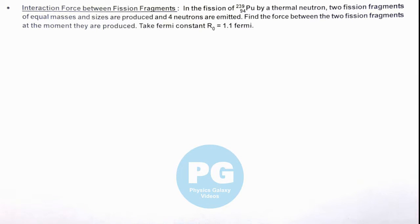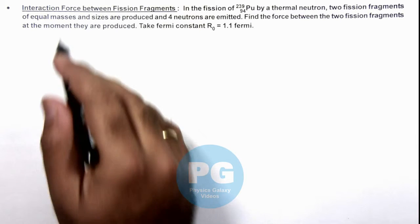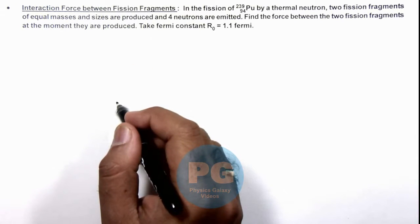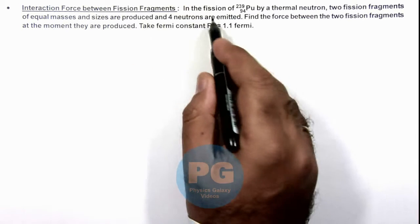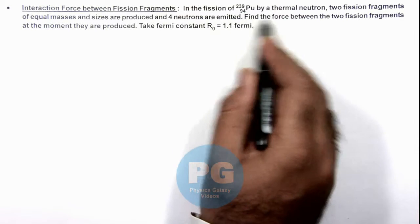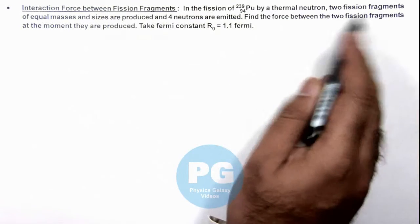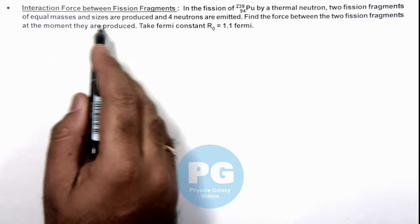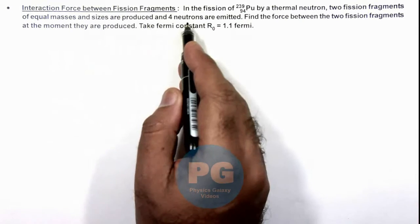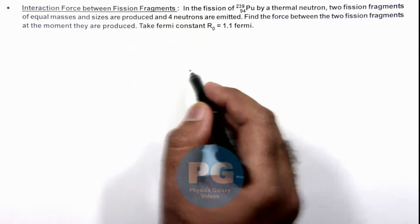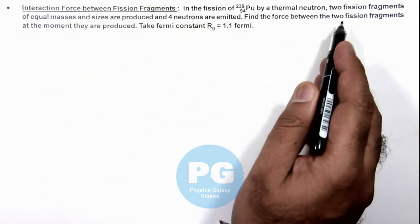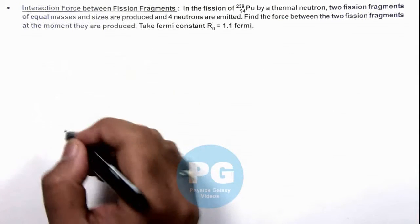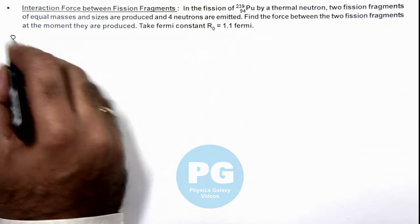In this illustration, we'll analyze the interaction force between fission fragments. Here we are given that in the fission of plutonium by a thermal neutron, two fission fragments of equal masses and sizes are produced, and four neutrons are emitted. We are required to find the force between the two fission fragments as they are produced. The Fermi constant value is given to us.